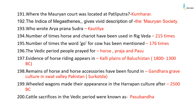The Mauryan court was located at Pataliputra, at Kumhrar. The Indika of Megasthenes gives a vivid description of Mauryan society. Kautilya wrote the Artha Pranshuddha (Arthashastra). Horse and chariot have been mentioned 215 times in the Rigveda.